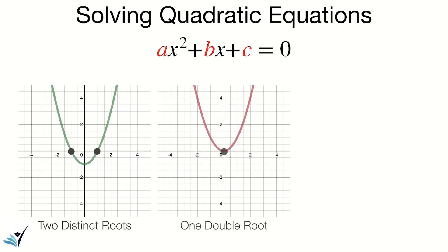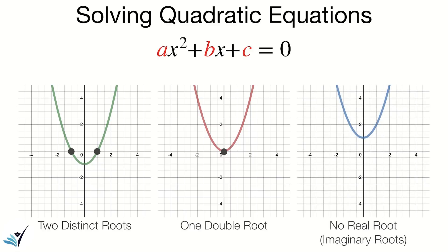Another possibility is when the parabola has only one intersection with the horizontal axis. In that case, if you solve the quadratic equation you would get one answer, and that answer is usually called a double root. The third possibility is when there is no real root and the parabola doesn't have any intersection with the horizontal axis.